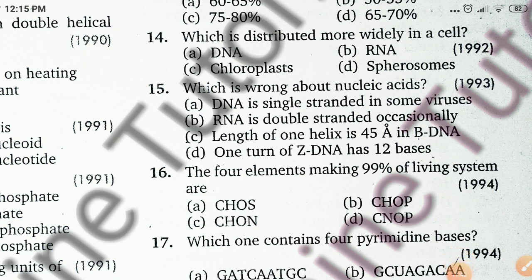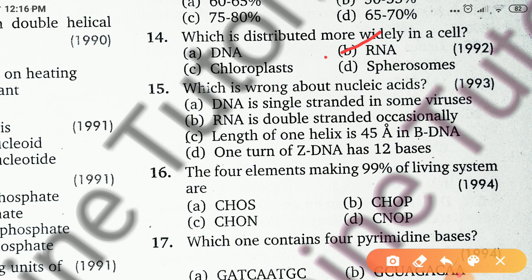The 14th question: which is most widely distributed in a cell — DNA, chloroplast, RNA, or spherosomes? The right answer is RNA. RNA is single-stranded and found throughout the cell. There are several types: ribosomal RNA (most abundant), transfer RNA, messenger RNA (2–5%), small nuclear RNA, cytoplasmic RNA, and genetic RNA found in viruses (riboviruses).